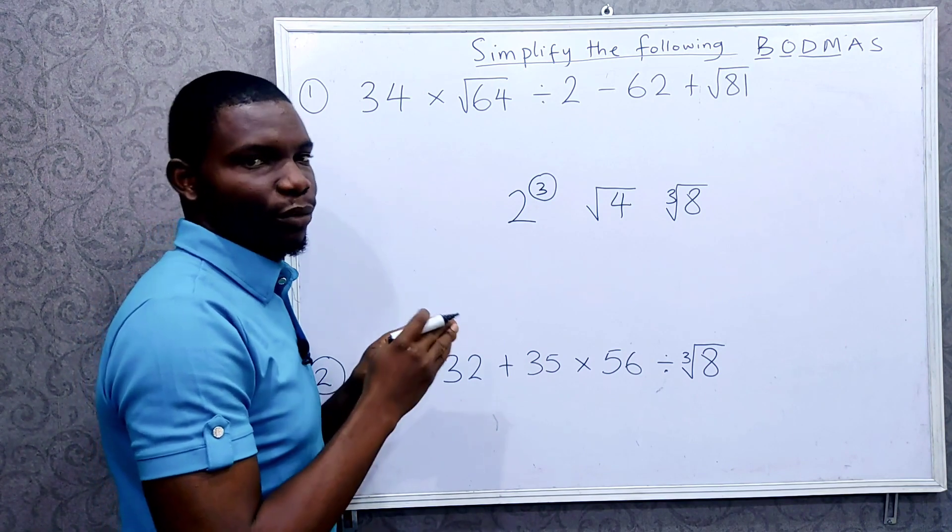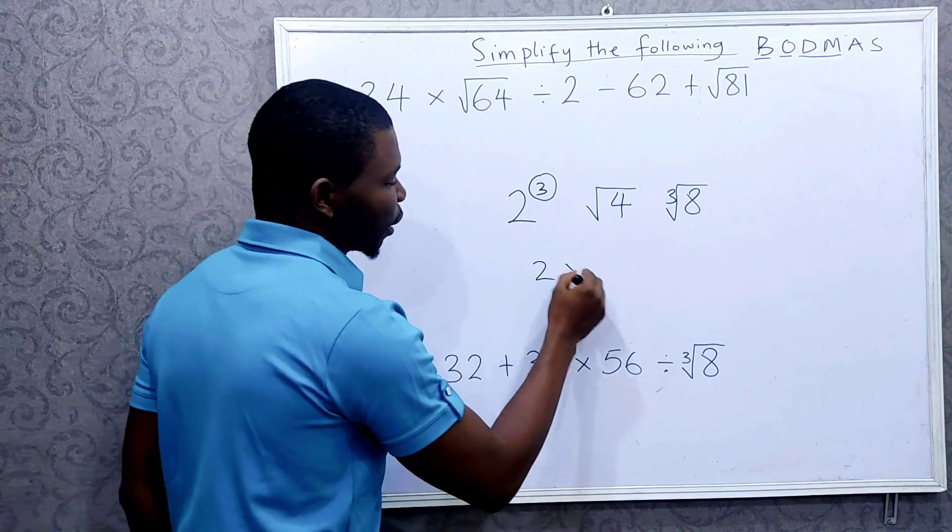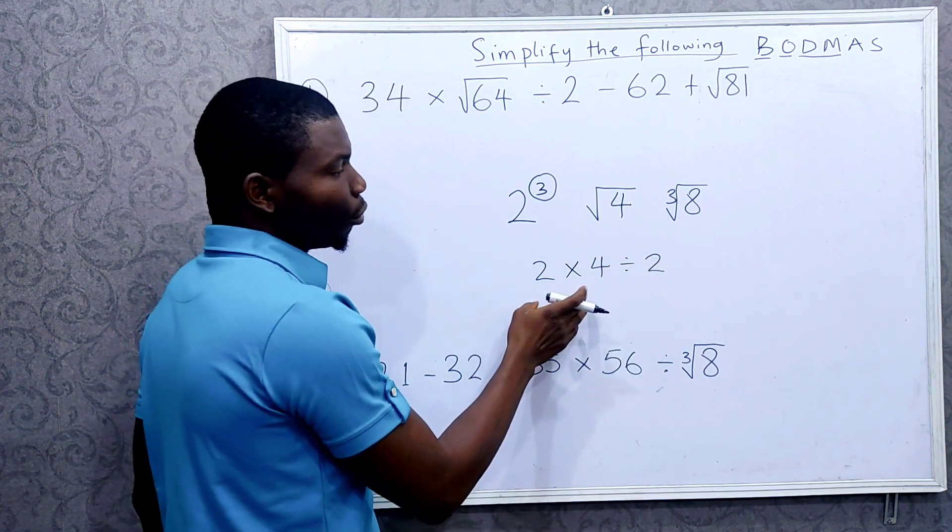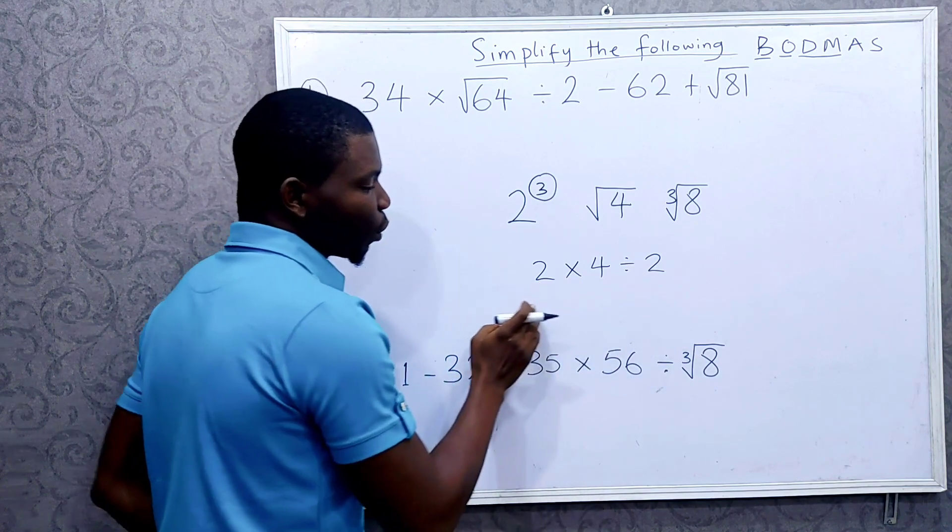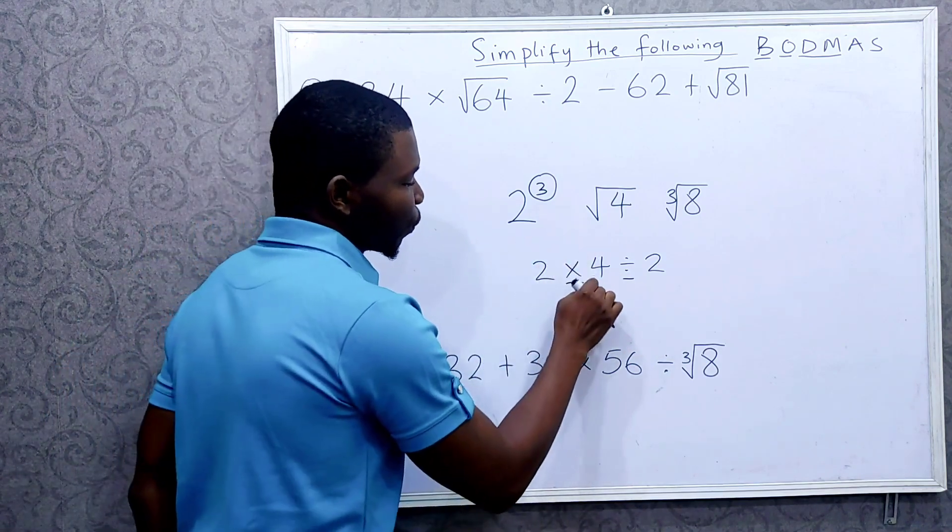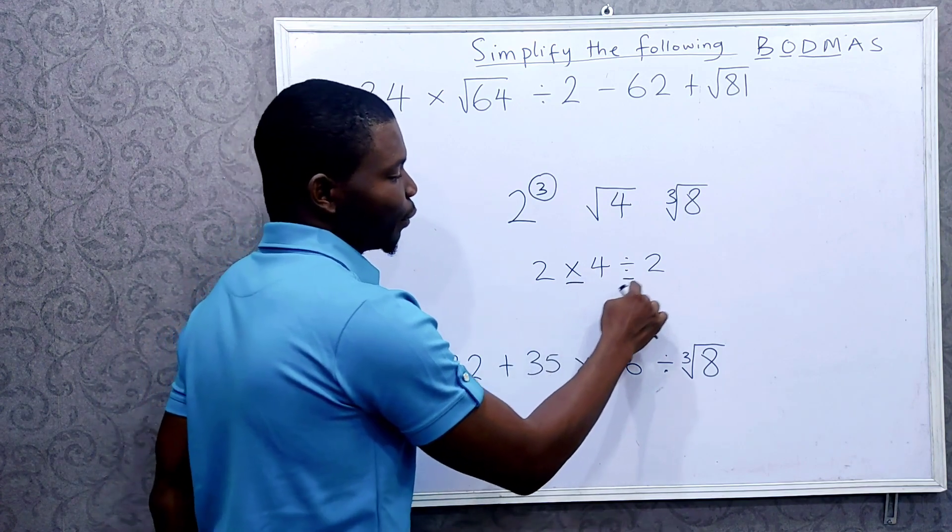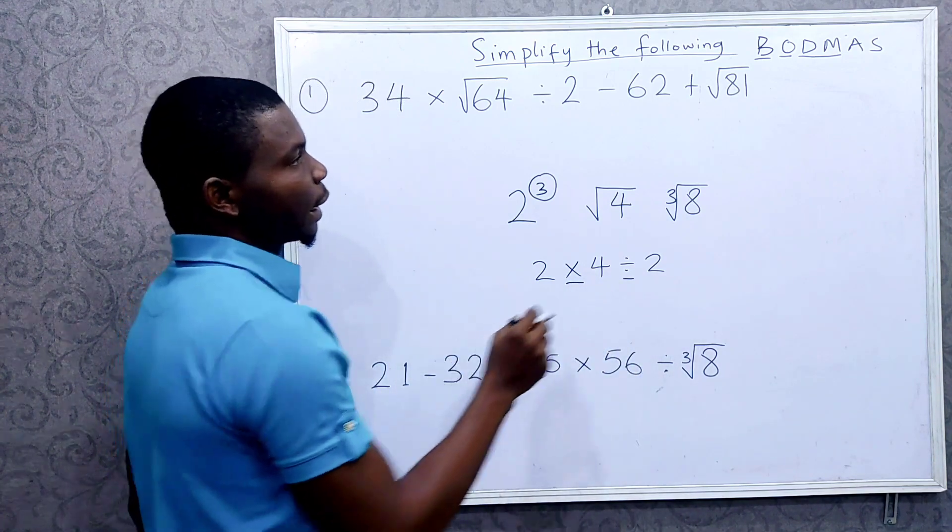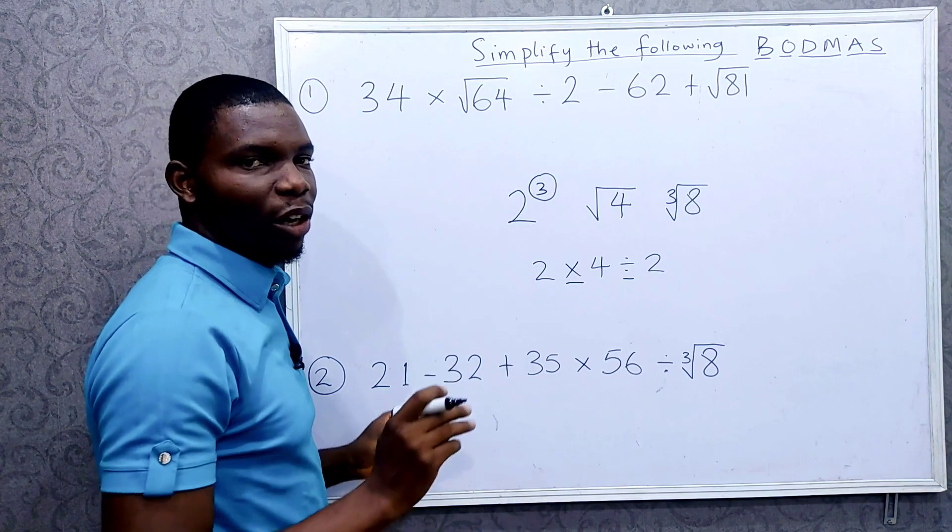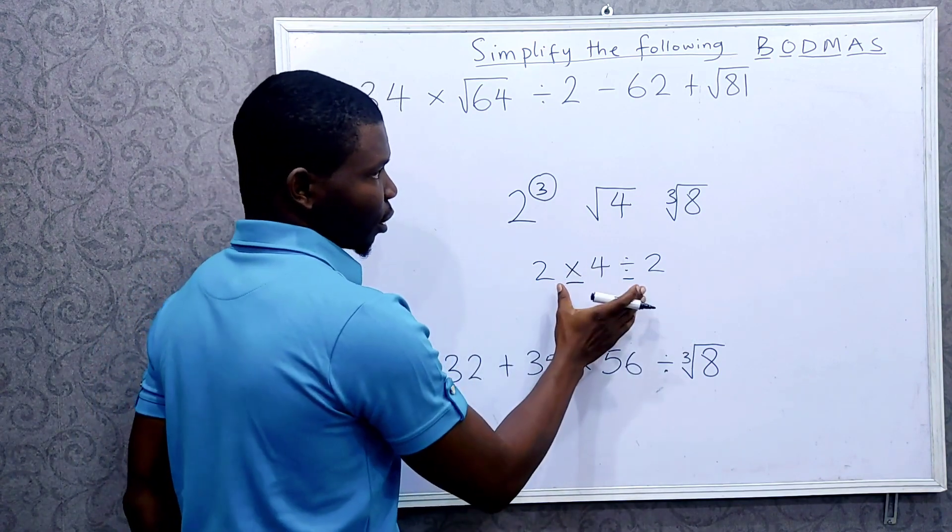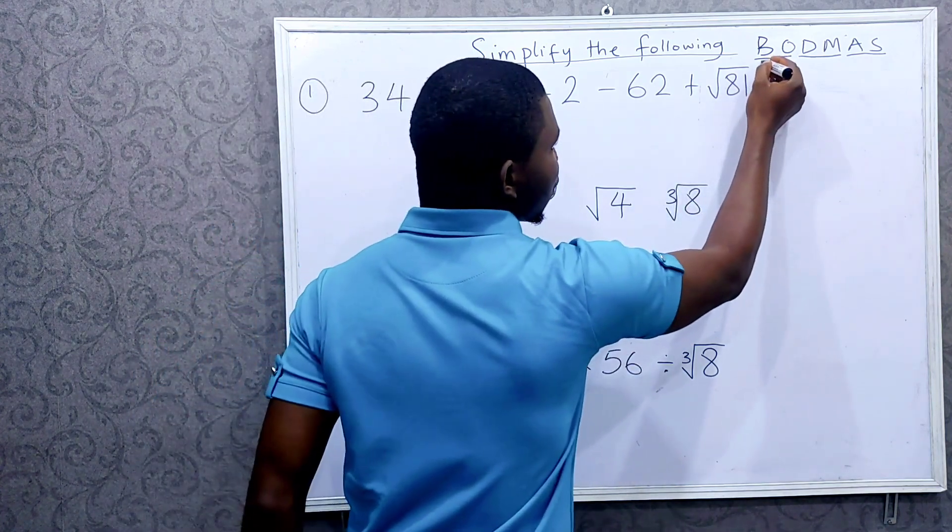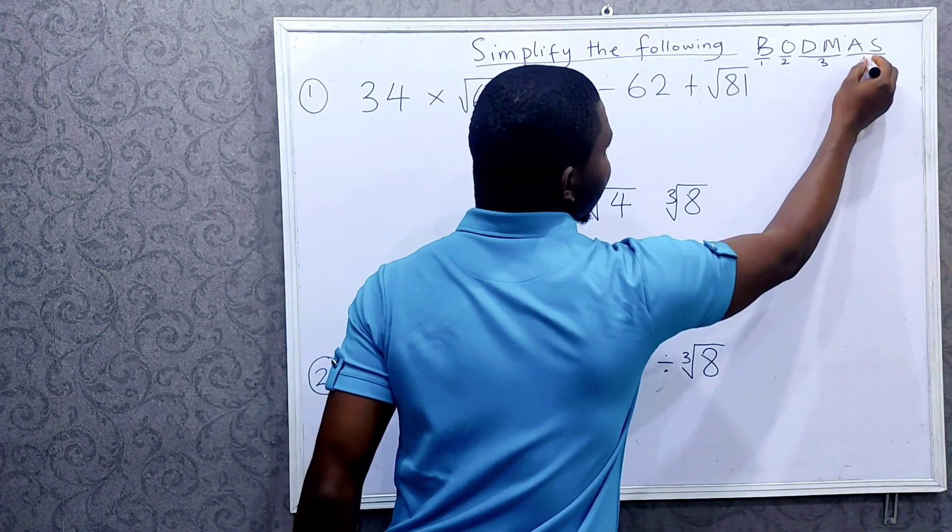Then the next level is division and multiplication. Both of them are on the same level. So if you have something like 2 times 4 divided by 2, the way you go about this is from left to right. Since both of them are on the same level, you go from left to right. You see 2 times 4, 2 times 4 is 8, then divide by 2. Then the next one is addition and subtraction, both of them are on the same level. So we go from left to right. So we just have four levels: the first is this, the second, the third, and the fourth.